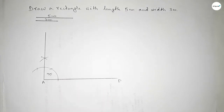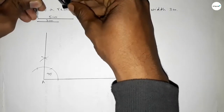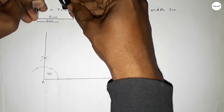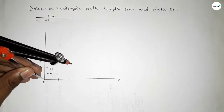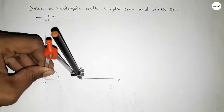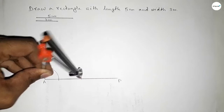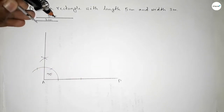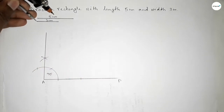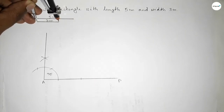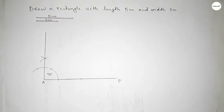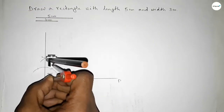Now taking the length 5 centimeters by using the compass and putting the compass on point A and marking the point. Then taking 3 centimeters by using the compass and putting the compass on point A and marking that length.